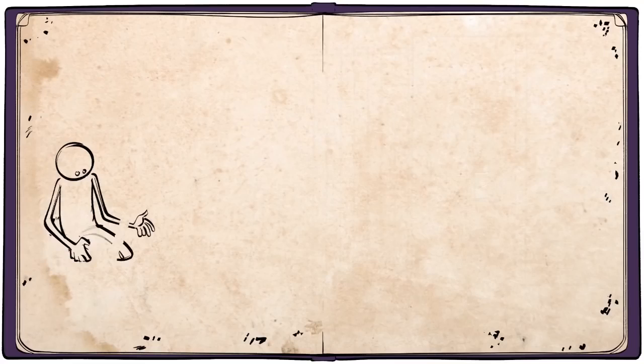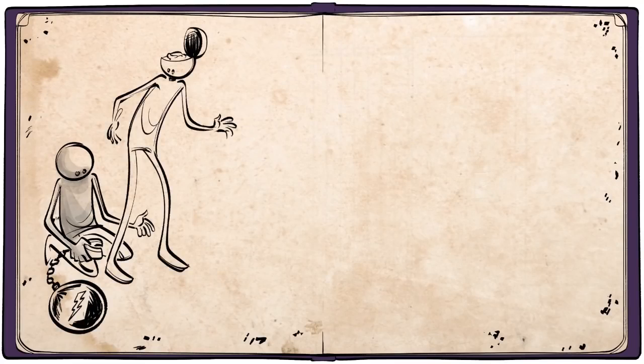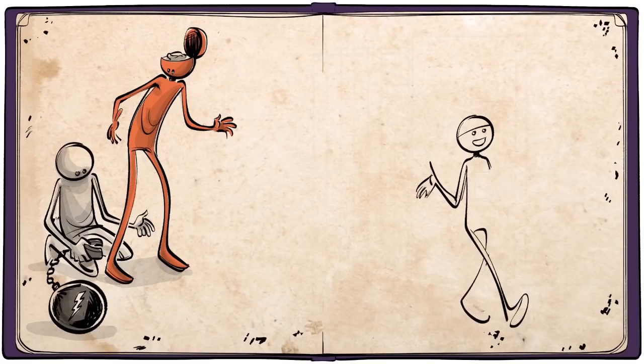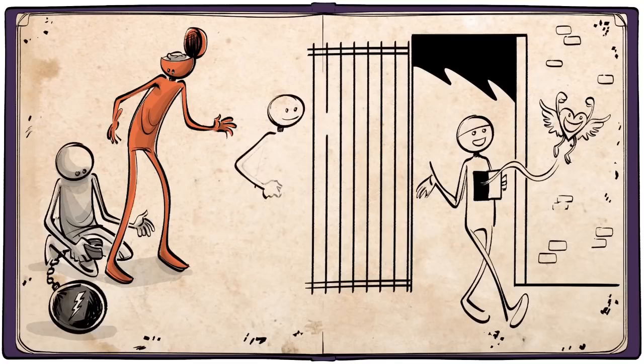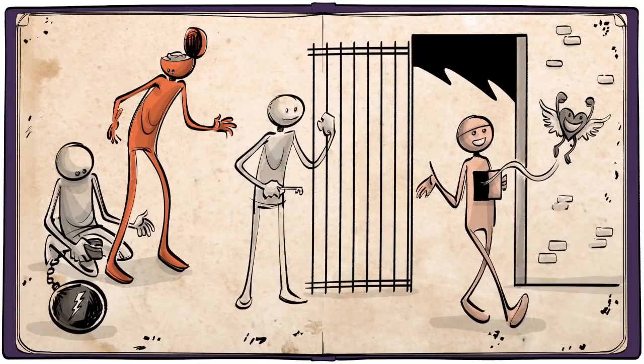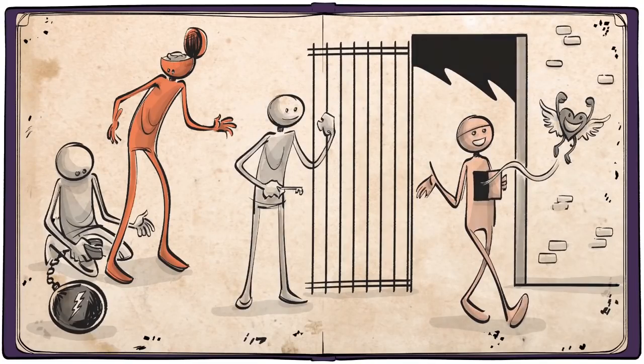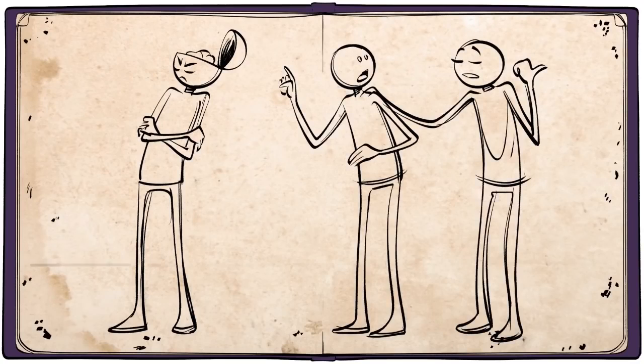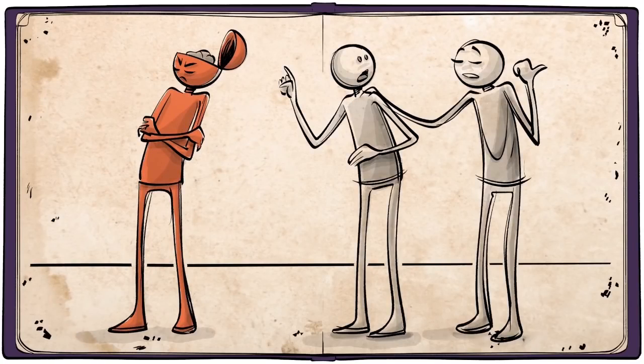Only an act of liberation, not instruction, can overcome stupidity. Here, we must come to terms with the fact that in most cases, a genuine internal liberation becomes possible only when external liberation has preceded it. Until then, we must abandon all attempts to convince the stupid person.